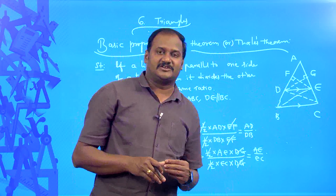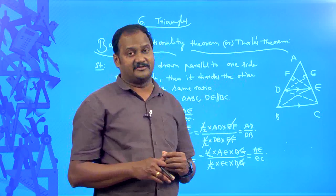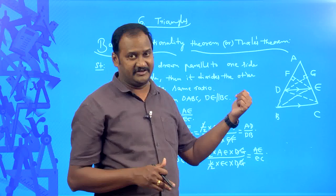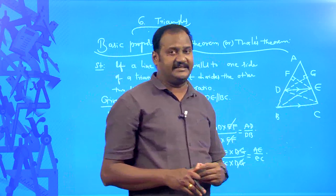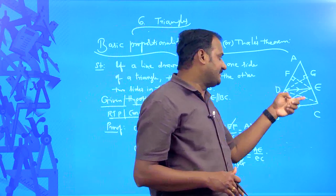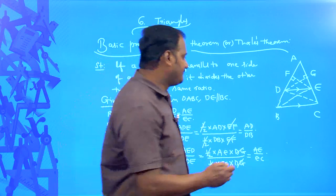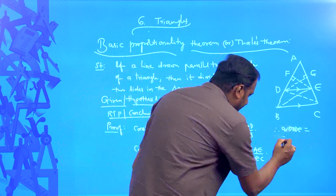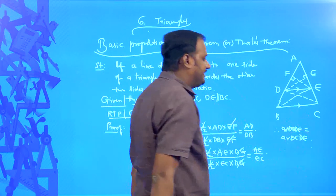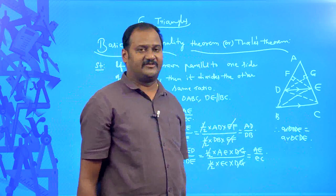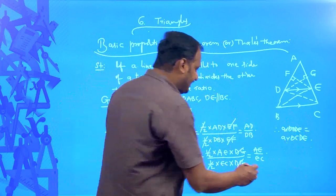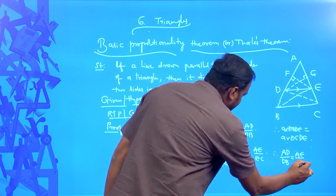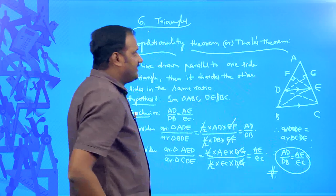In our ninth class, in the concept of areas of triangles and parallelograms, we discussed that if two triangles lie on the same base and between the same parallel lines, then their areas are equal. Triangles BDE and CDE lie on the same base DE and between the same parallel lines DE and BC. Therefore, area of triangle BDE equals area of triangle CDE. Since both denominators are equal, the left-hand sides are equal and therefore AD/DB equals AE/EC.